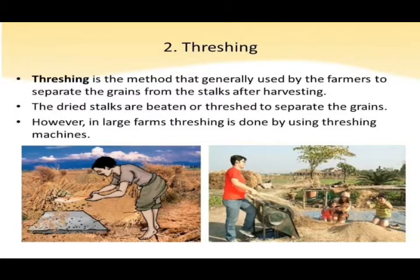The second method is threshing. Threshing is the method generally used by farmers to separate the grains from the stalks after harvesting. The dried stalks are beaten or threshed to separate the grains. However, in large farms, threshing is done by using a threshing machine.